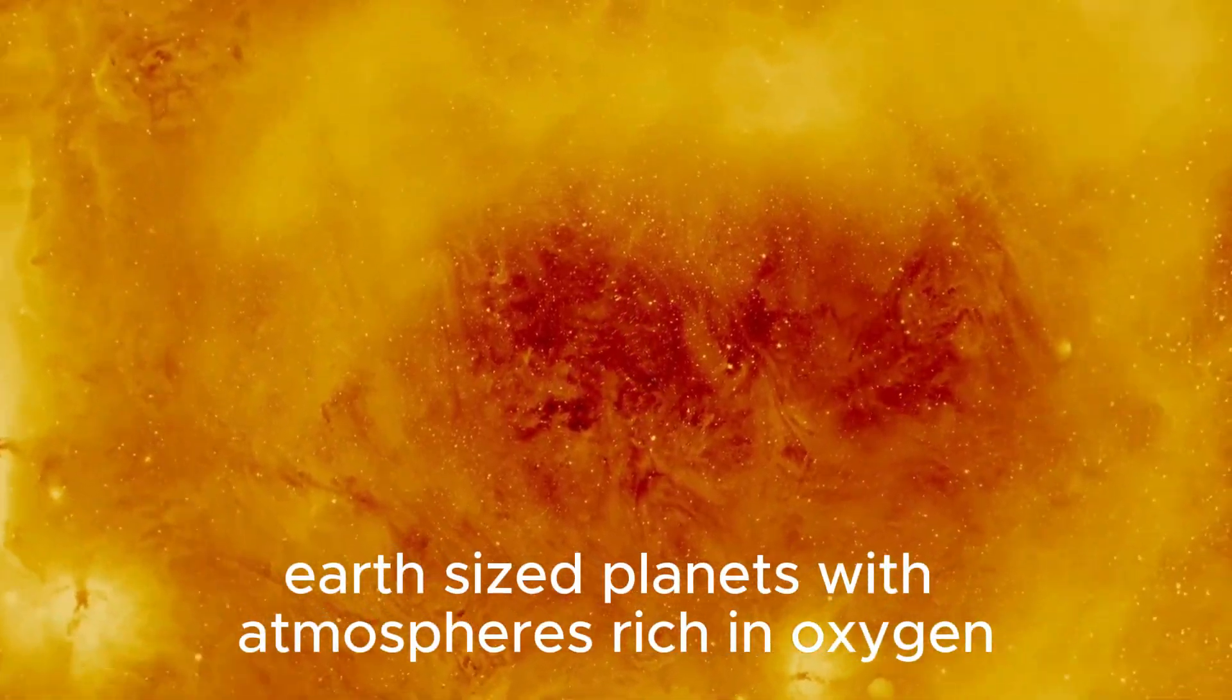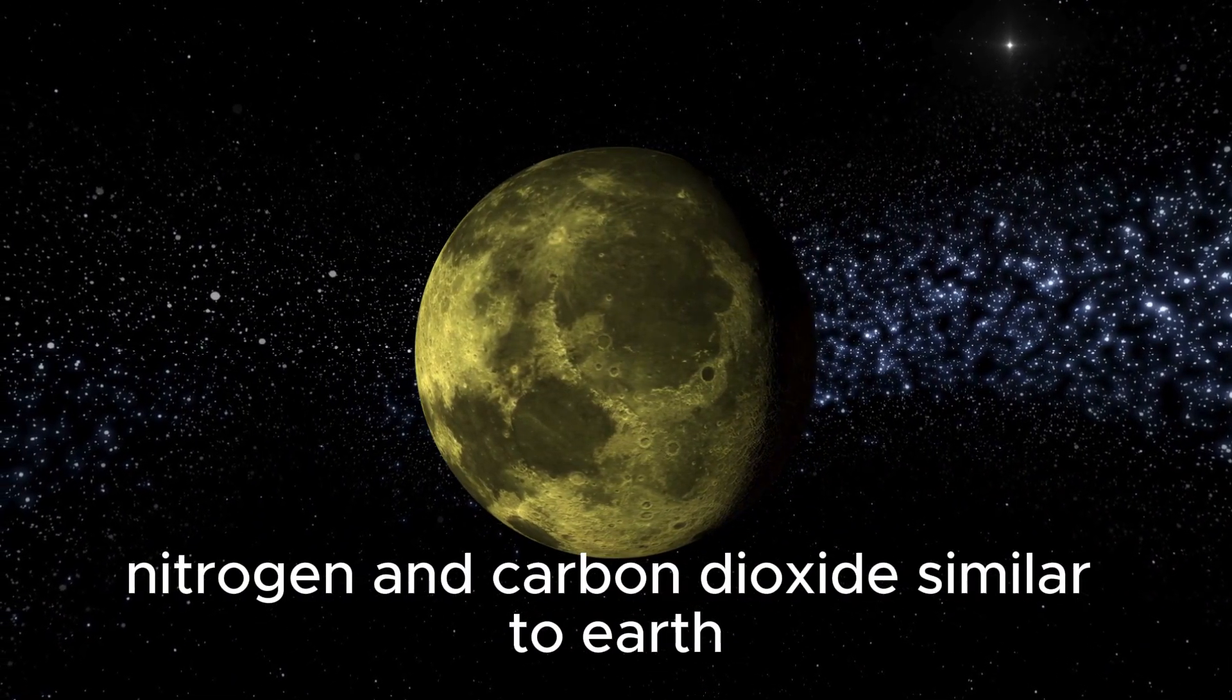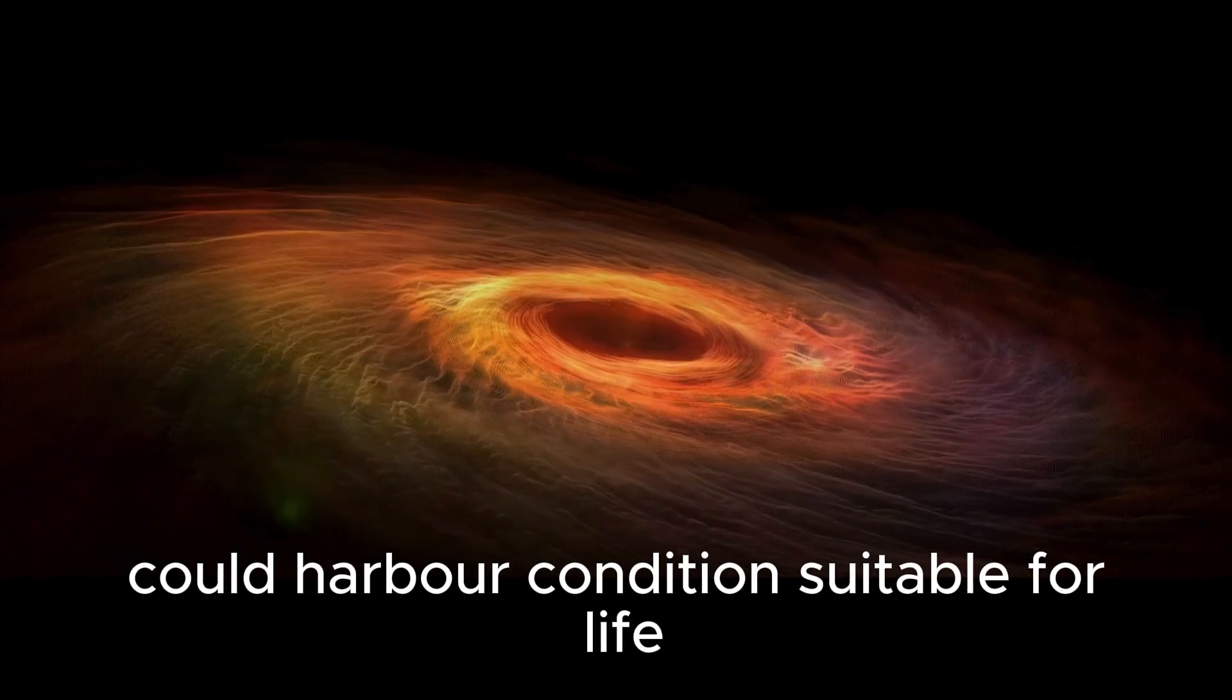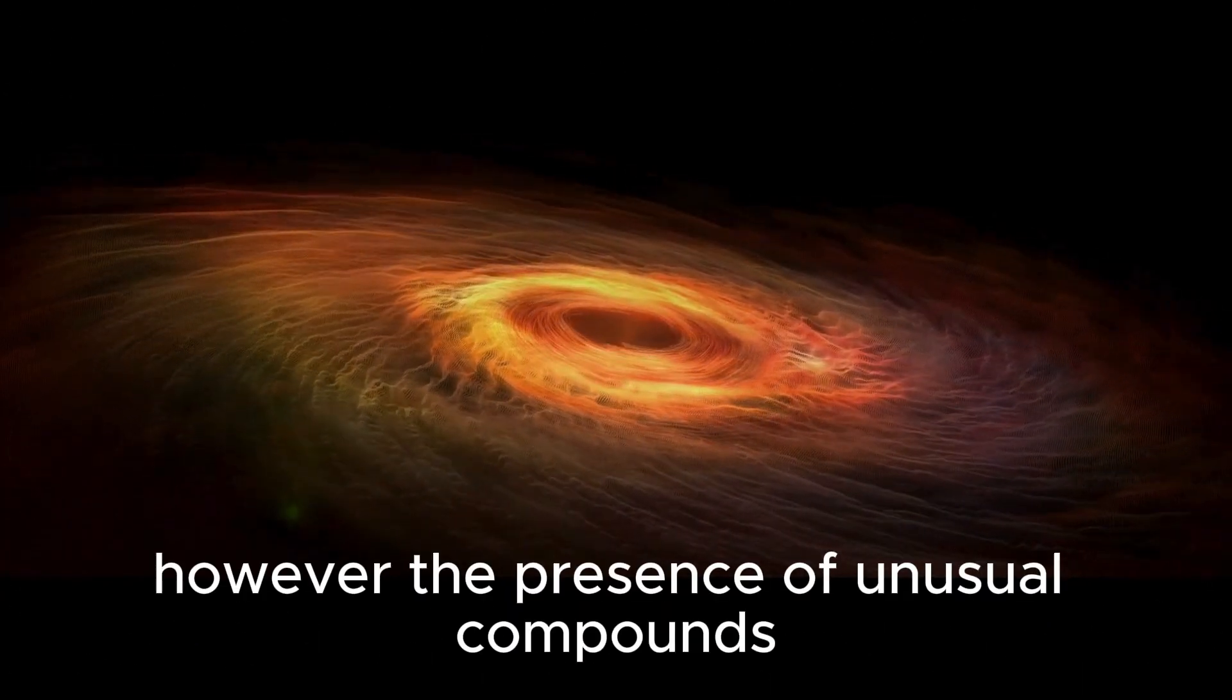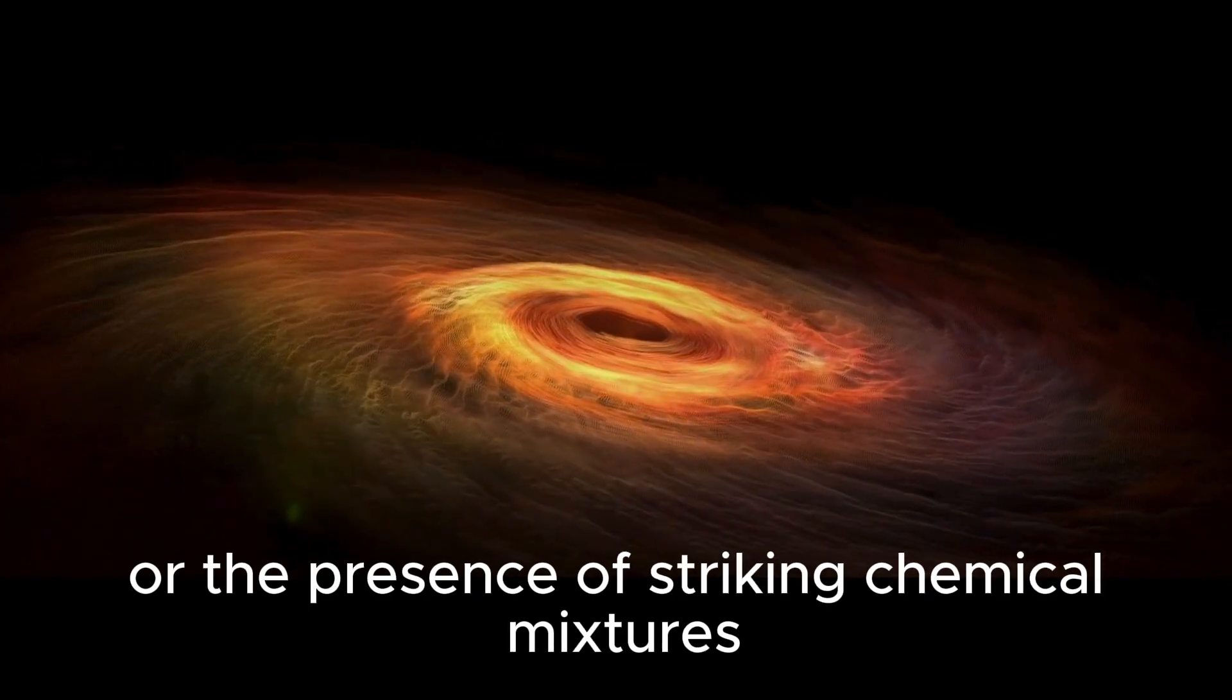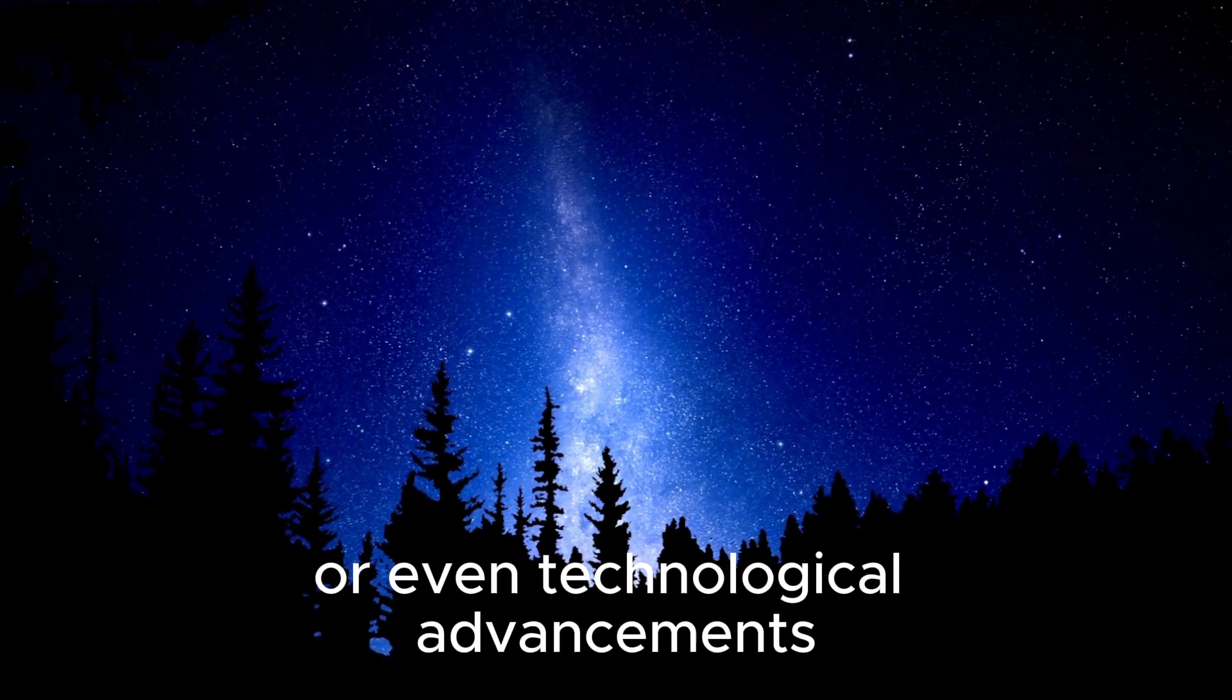Earth-sized planets with atmospheres rich in oxygen, nitrogen, and carbon dioxide, similar to Earth, could harbor conditions suitable for life as we know it. However, the presence of unusual compounds or striking chemical mixtures could indicate alternative forms of life or even technological advancements.